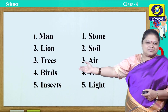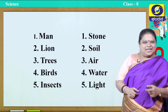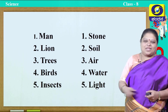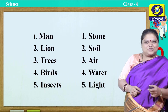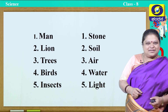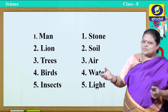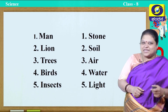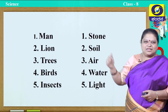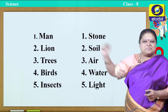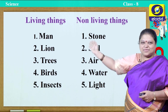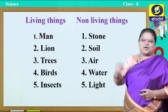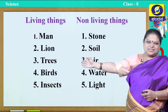I have made it into two columns. In the first column you can see: man, lion, trees, birds, insects. In another column you find: stone, soil, air, water, light. My question is why I have made it into two columns. The first column — all these are nothing but living organisms, and this column — all that are present here are non-living things. In other words, non-living things you call them as abiotic factors, and living things you call them as biotic factors.